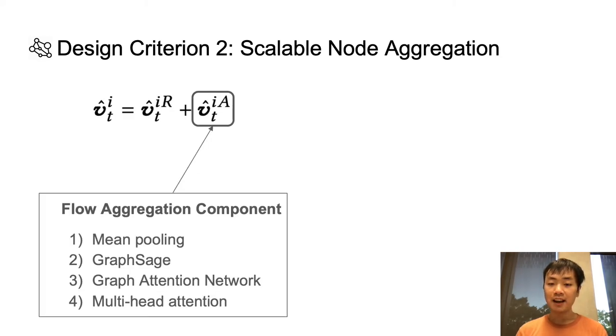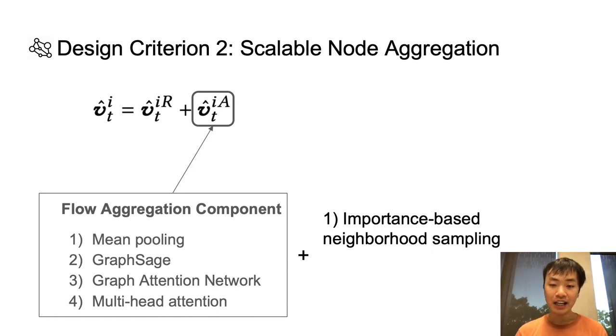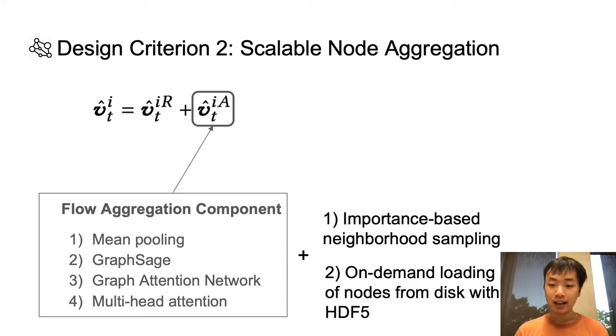So to summarize, there are four methods of aggregation that we tested, mean pooling, graph sage, graph attention network, and multi-head attention. But in order to make these aggregation methods scale well to nodes with a large degree, we add an extra step where instead of aggregating across all neighbors of a node, we just sample a small number of neighbors and we put more weight on neighbors that are more popular. In addition, we store the graph in HDF5 format so that for each training step, we only need to load a batch of nodes on demand from disk. And this completes an overview of the RADflow architecture.